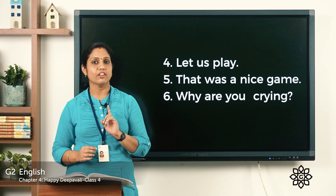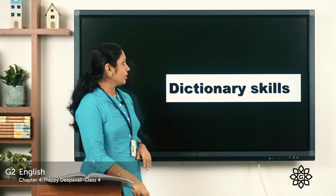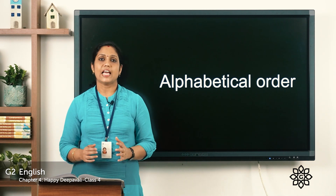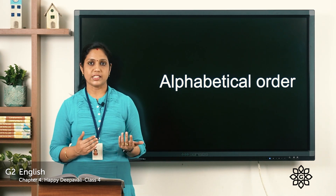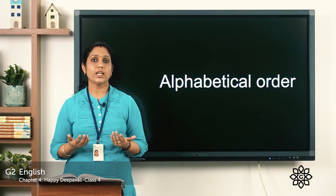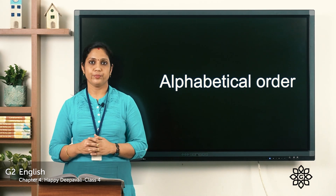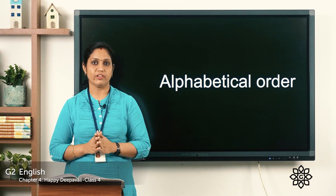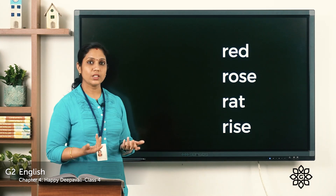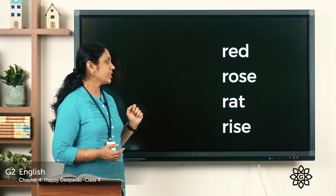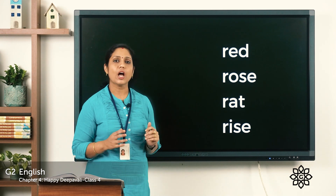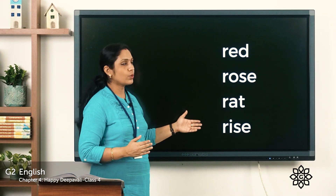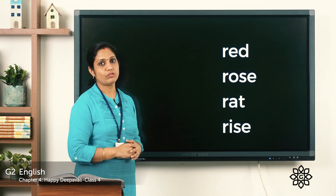Always remember, whenever we begin a sentence the first letter should be a capital letter. Now let's move on to dictionary skills. We have to learn alphabetical order — we covered this in our previous chapter, so today let's revise. We know the English letters go from A to Z in order. When some words are given, we arrange them alphabetically. Today we'll look at words that begin with the same first letter — like red, rose, rat, rice, which all begin with r.